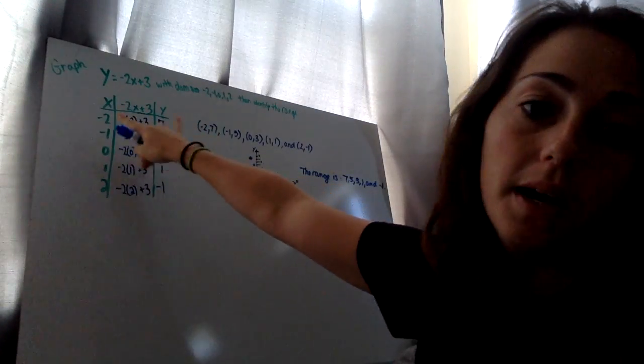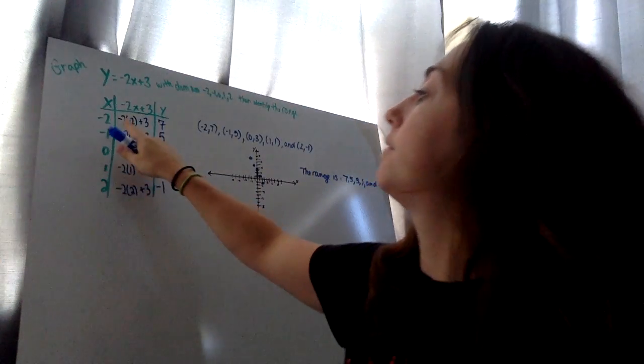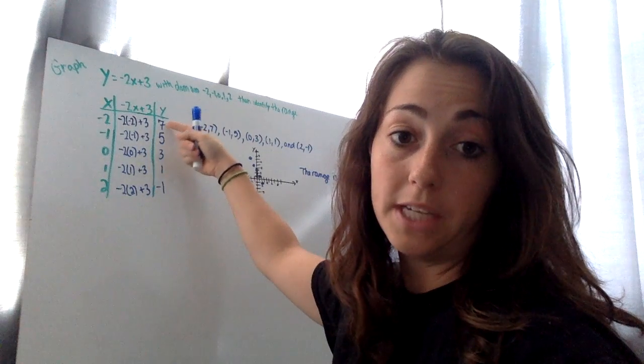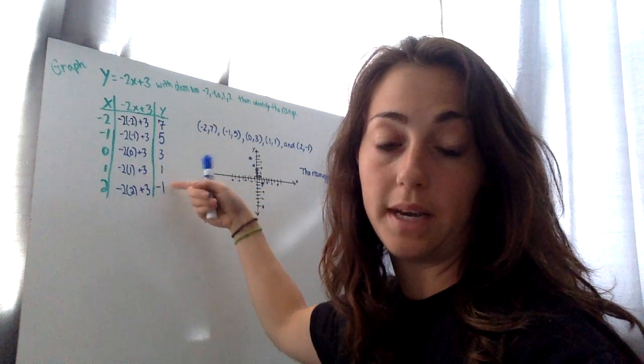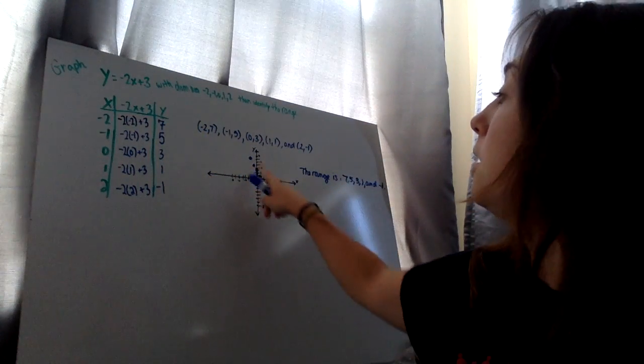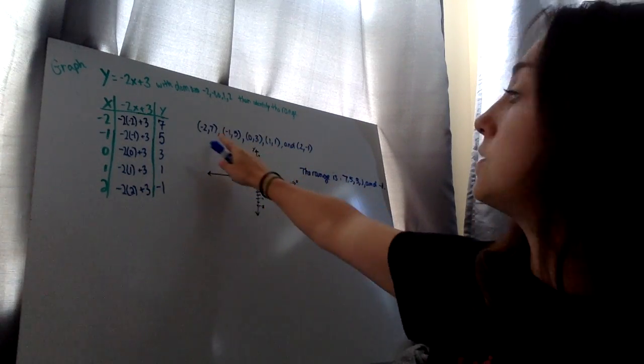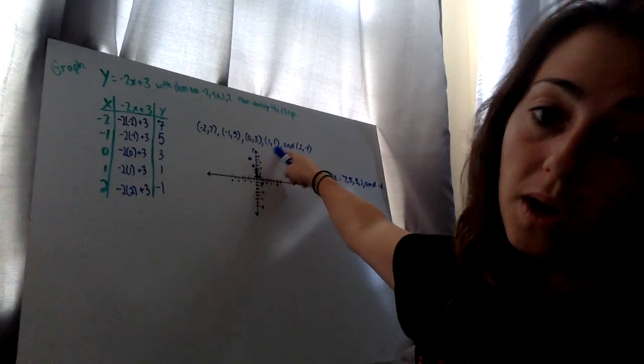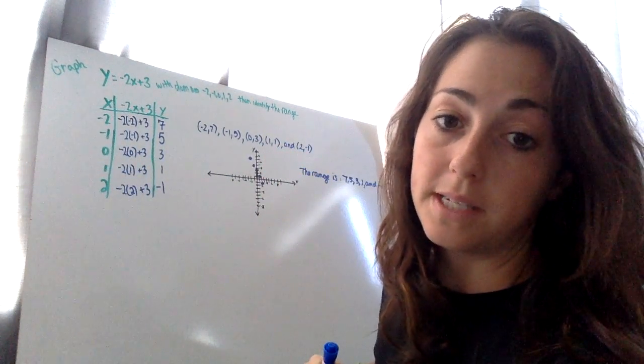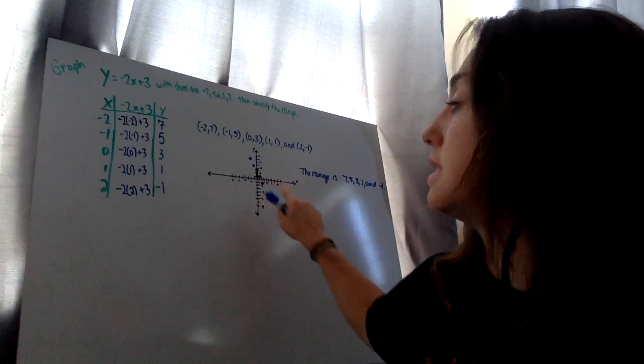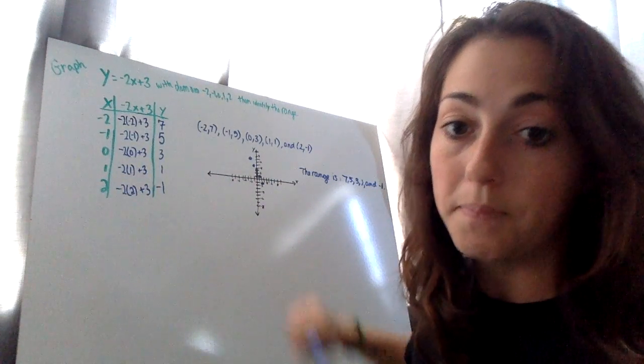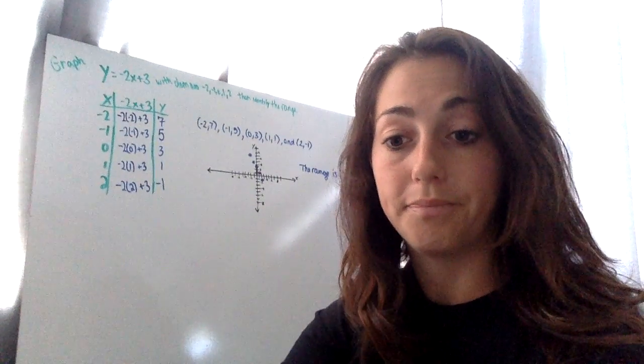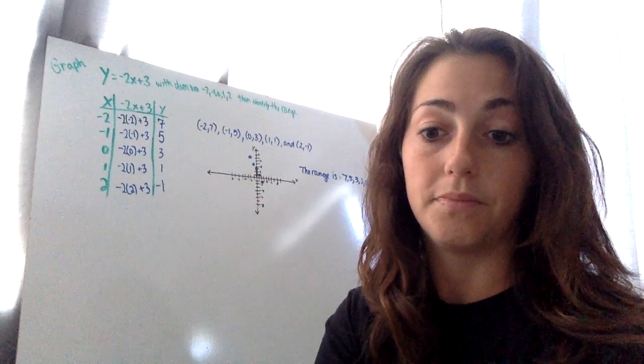So my table, I made that here. I plugged in negative 2, negative 1, 0, 1, and 2 in for my x value of the function. My range turned into 7, 5, 3, 1, negative 1. I plotted those five points here. First I listed my order pairs, negative 2, 7, negative 1, 5, 0, 3, 1, 1, and 2, negative 1. I plotted those five points and made sure to label my axes and some numbers on the coordinate plane. And then I wrote my range answer is 7, 5, 3, 1, and negative 1. Awesome. Thank you. Thank you.